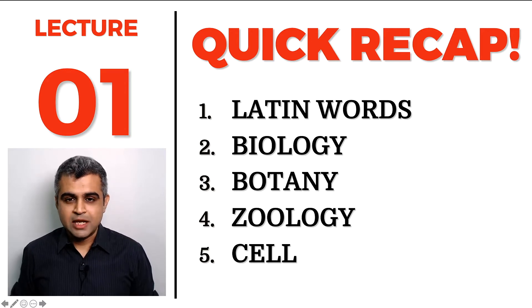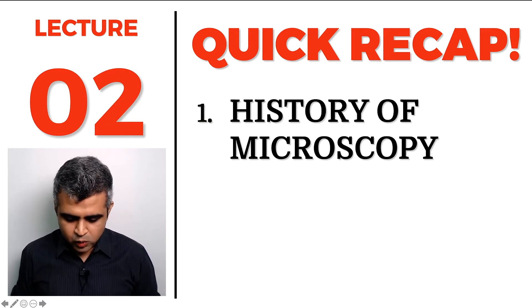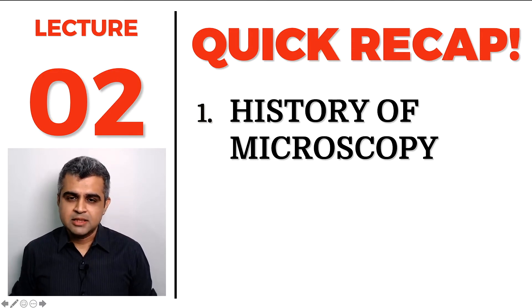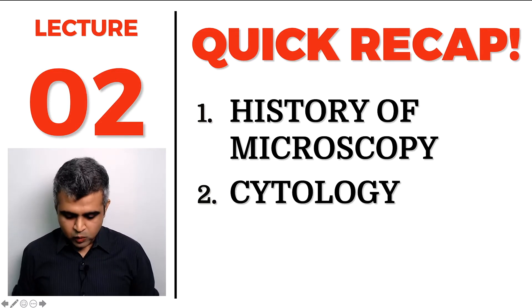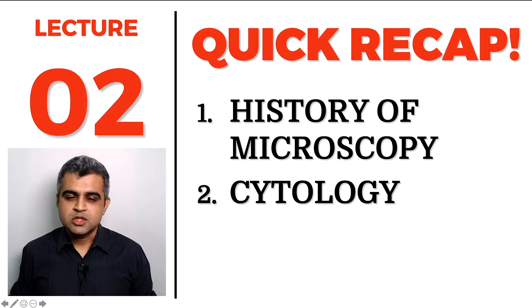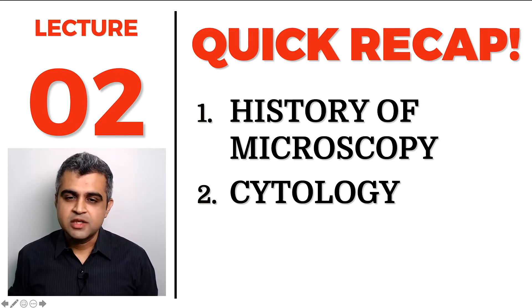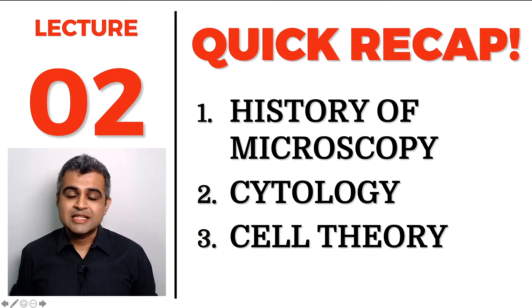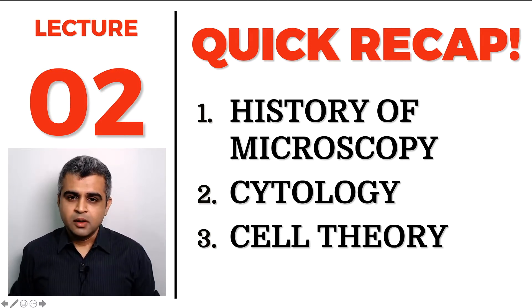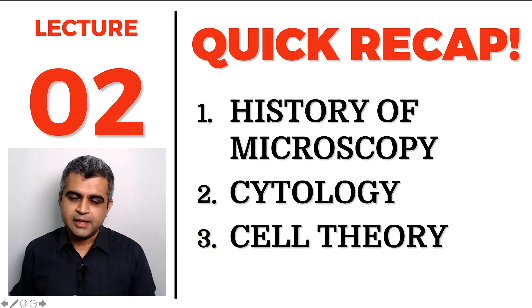In lecture number two, we continued talking about the history of microscopy and spoke about Robert Hooke and Anton von Leeuwenhoek, who pioneered microscopy. We saw that cytology — cyton meaning cell, logos meaning study — is defined as the microscopic study of the cell. We also spoke about the cell theory as proposed by Schleiden, Schwann, and Virchow: all living things are made up of cells or their products, and all new cells come from pre-existing cells.